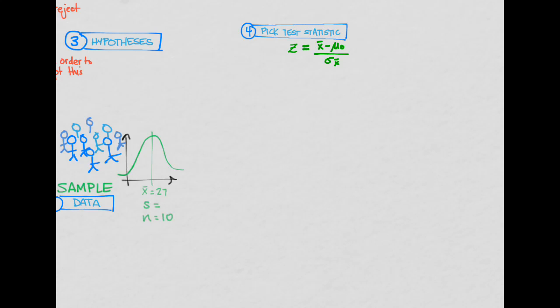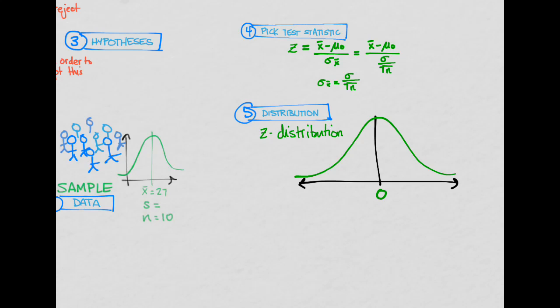z equals the mean of our sample minus our hypothesized mean over the standard error. And you'll remember that the standard error, in this case, equals the standard deviation of the population over the square root of the sample size. So if we make that substitution in here, this is the formula that we get. And because our distribution, we said, was normal, we can use the z distribution, which has a mean at zero and a standard deviation of one.